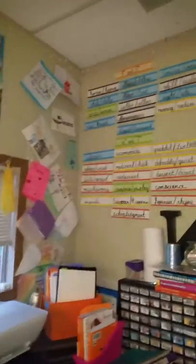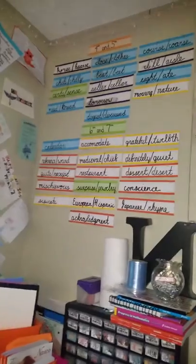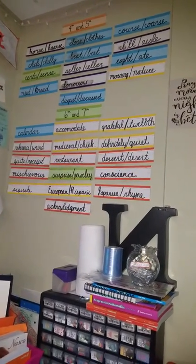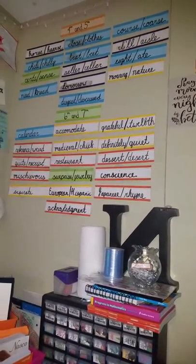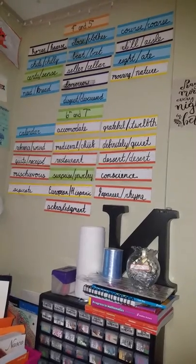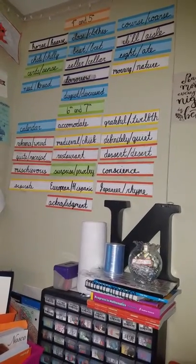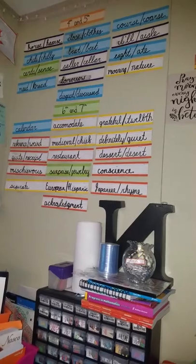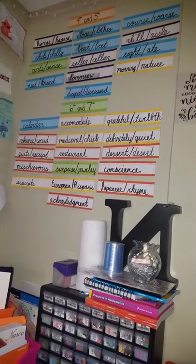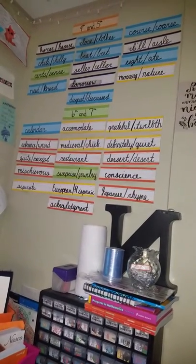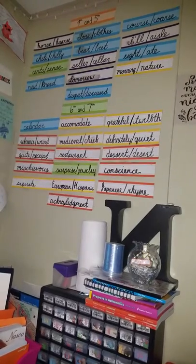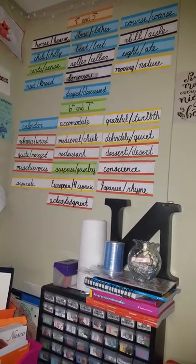Another tip I did was I took these strips that I got from the dollar store — a dollar a pack. I laminate them and put them on the wall. When I get new spelling words for the children, I just erase them and put the new words up. This is a great way for the kids to see the words throughout the time they're practicing them.